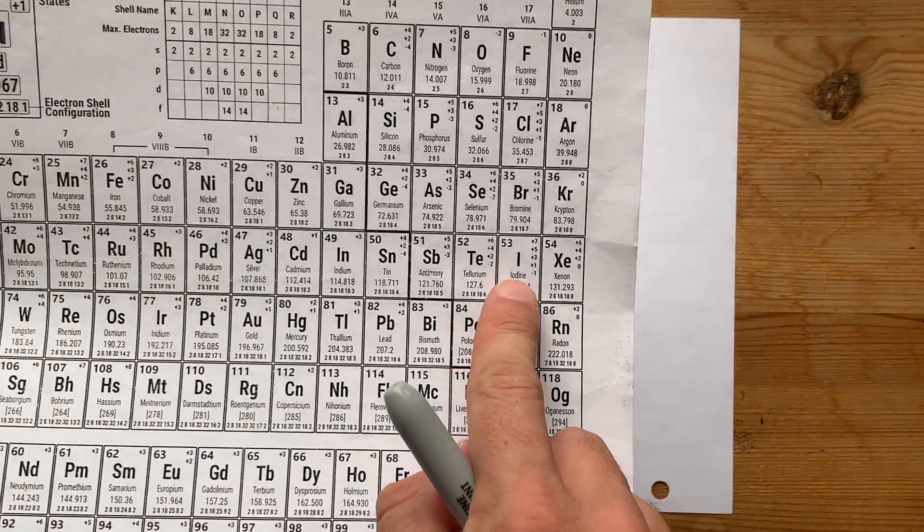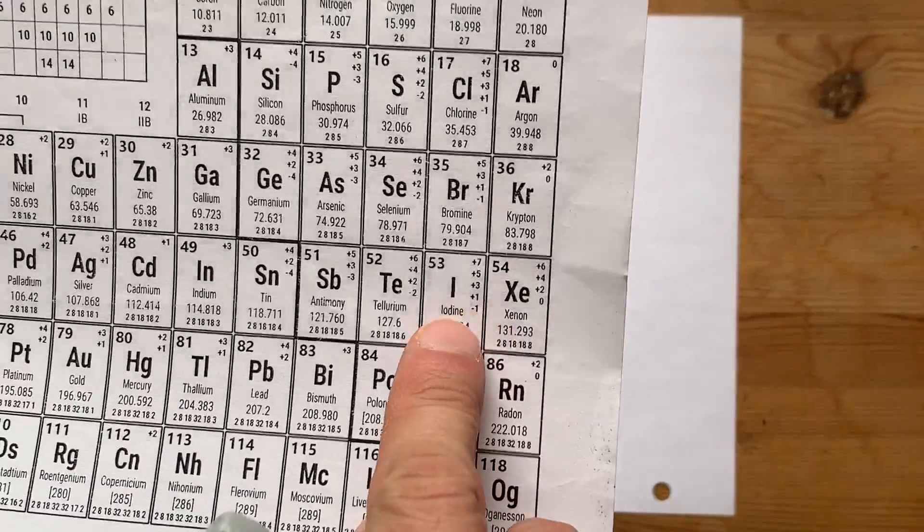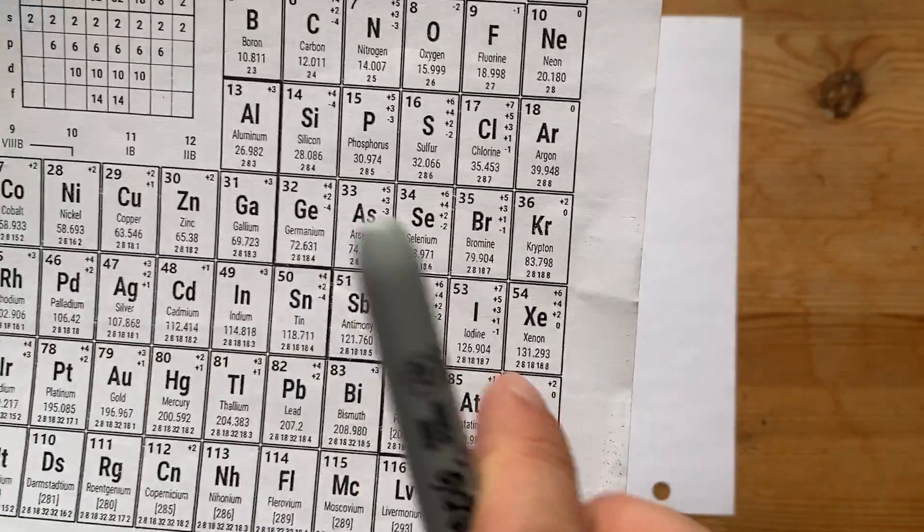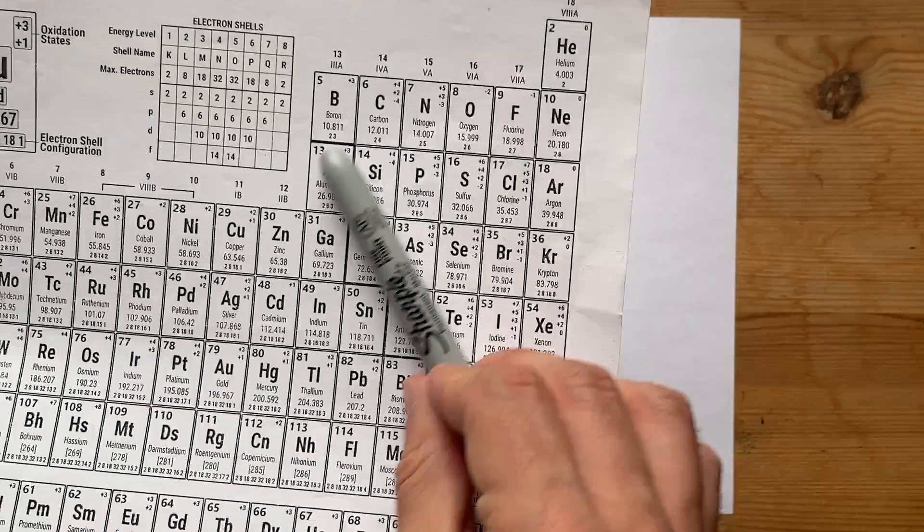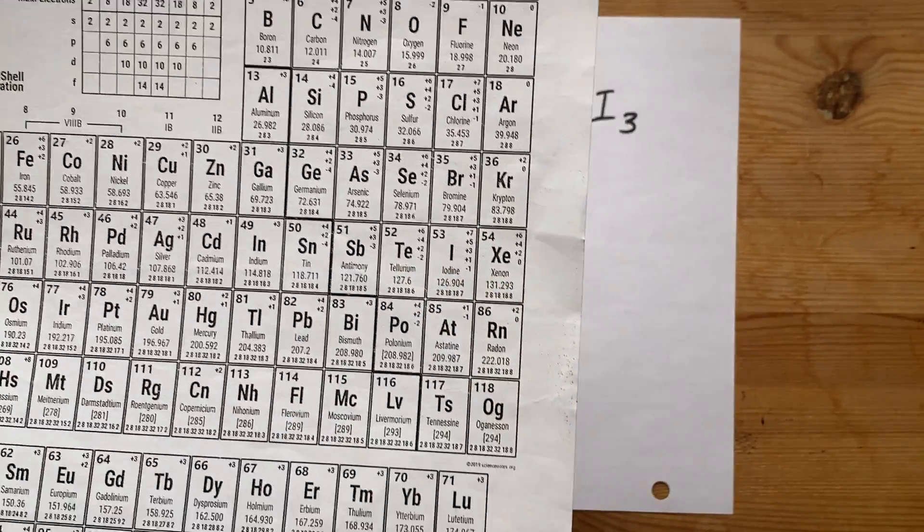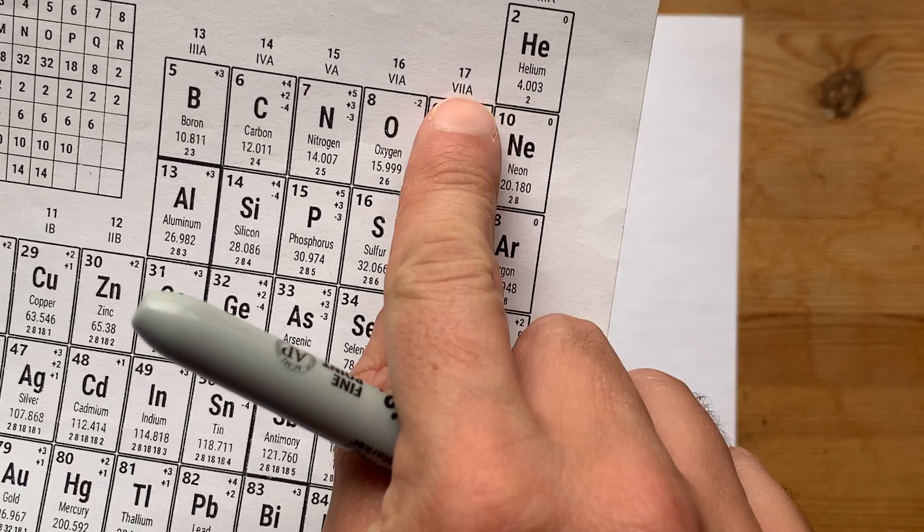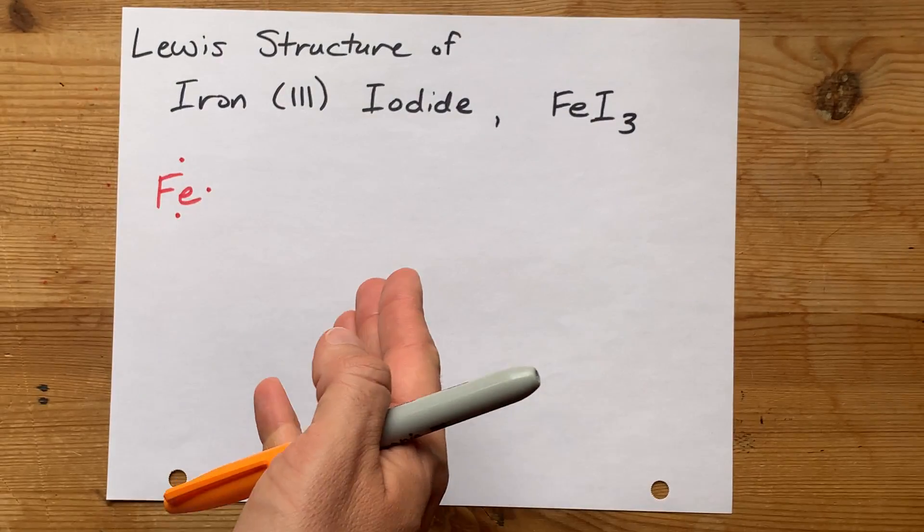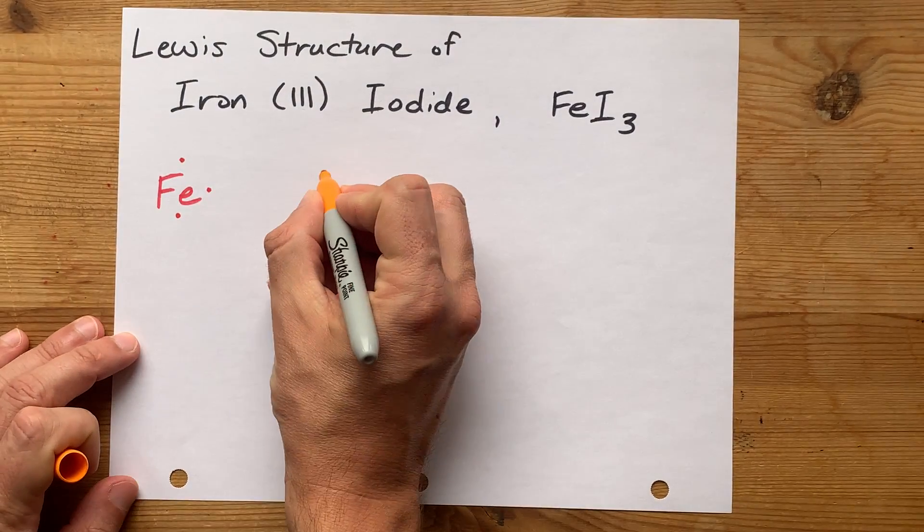Now, iodide comes from iodine, a non-metal on the periodic table. I know it's a non-metal because it comes from the right-hand side of that staircase that's often written in. And it's in group 17, which means it brings 7 valence electrons with it.